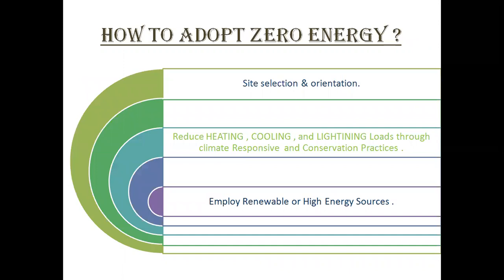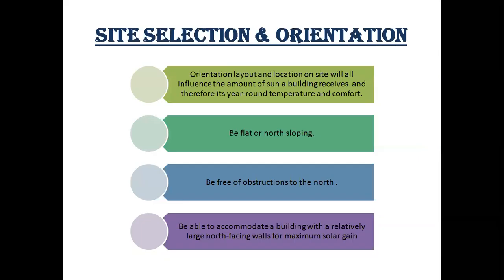How to adapt to zero energy? First is site selection and orientation. Second is to reduce heating, cooling, and lighting loads through climate-responsive and conservation practices. Third is to employ renewable or high-efficiency energy sources.